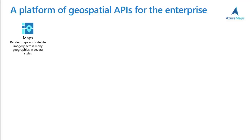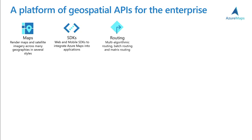First, we have the map rendering control, which allows you to get satellite images and map images into your applications. Next, we have the web and mobile SDKs to integrate Azure Maps into your applications. You can also get routing — from multi-algorithm routing, it could be through batch routing and match routing, or even just get from one point to another.